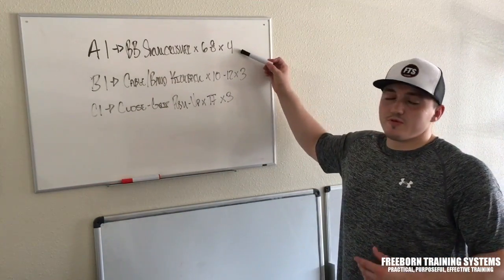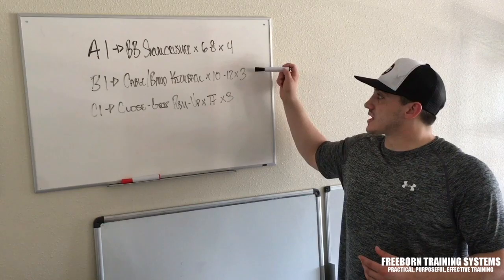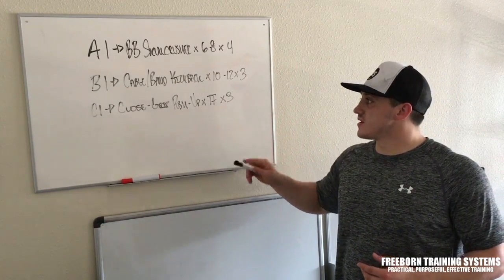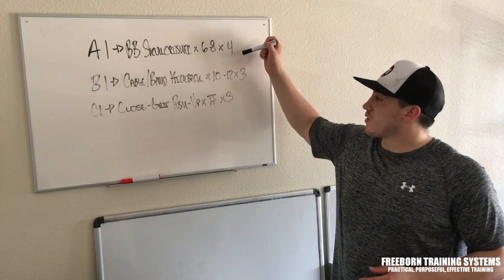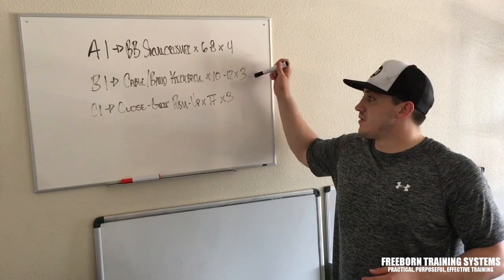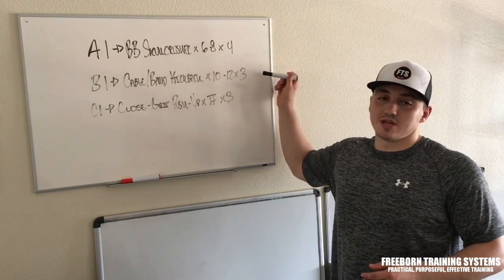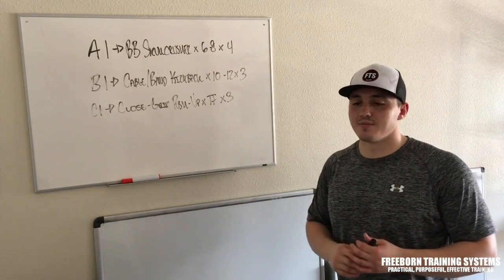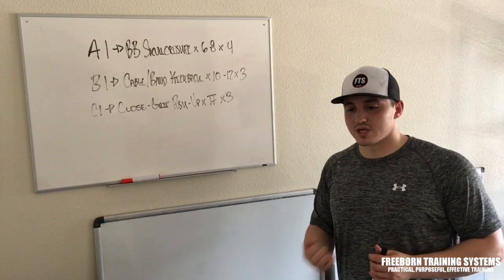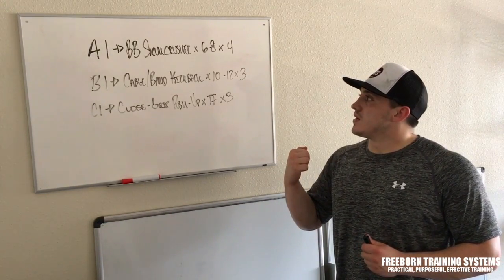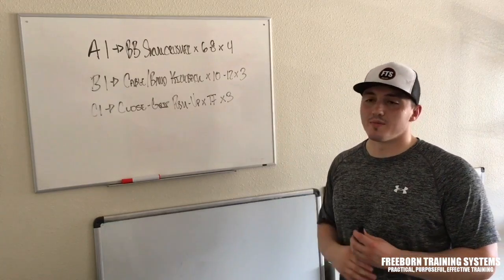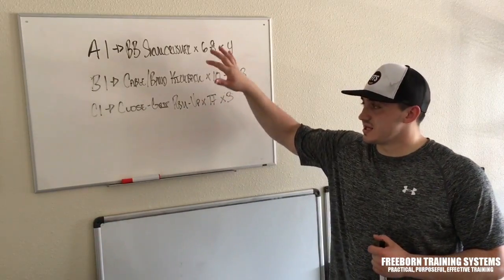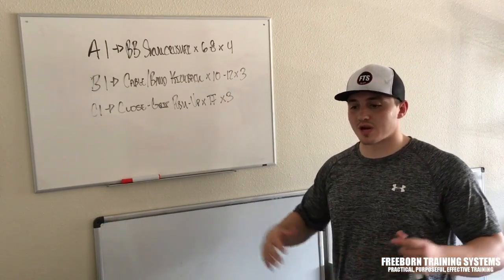The skull crusher will do four sets, the kickback will do three sets, the close grip push-up will be to failure for three sets. For the skull crusher we'll do six to eight reps, and for the cable or band kickback we'll do ten to twelve reps. So we're covering all our rep ranges, using heavier weights for short amount of time, lighter weights for longer amount of time, controlling the lowering portion, and getting plenty of metabolic stress. We're covering all three of those mechanisms for hypertrophy and training the tricep through a variety of angles.